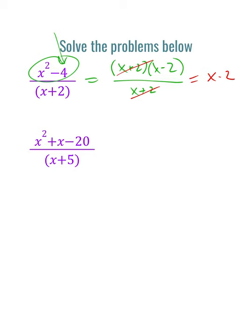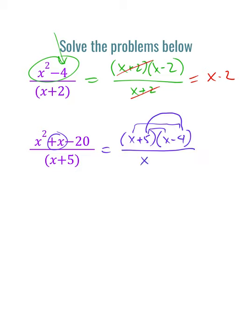The other version is where factoring right out of the gate is helpful. We're hoping that x plus 5 is one of the factors in the numerator. With x plus 5 and x minus 4: outside is negative 4x, inside is positive 5x, which adds up to plus 1x, and 5 times negative 4 is negative 20. So this works. x plus 5 stays in the denominator, we have x plus 5 in both, so our final answer is just x minus 4.